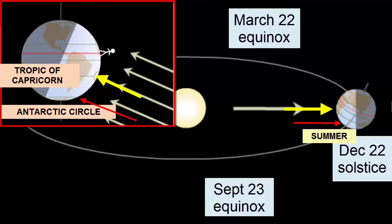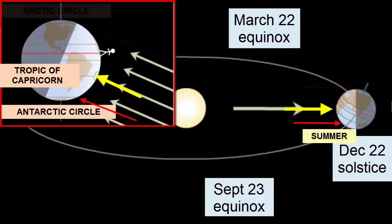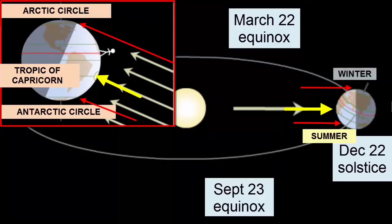In the Northern Hemisphere, inside the Arctic Circle, the reverse happens — 24 hours of darkness, winter season for the North.